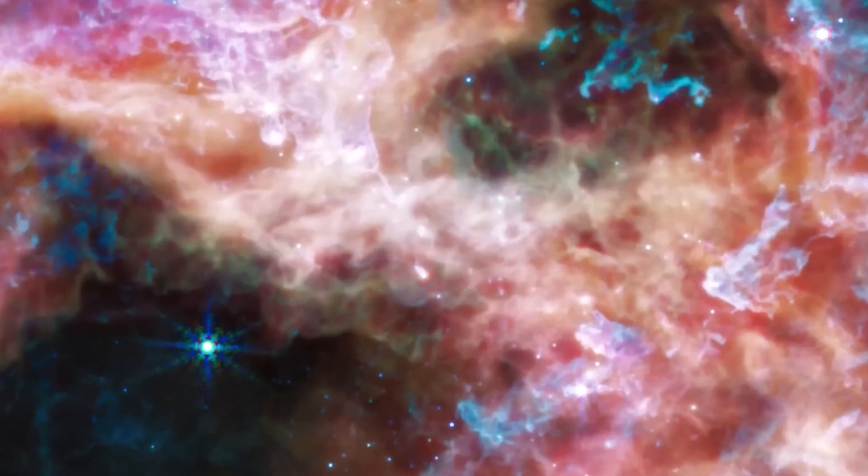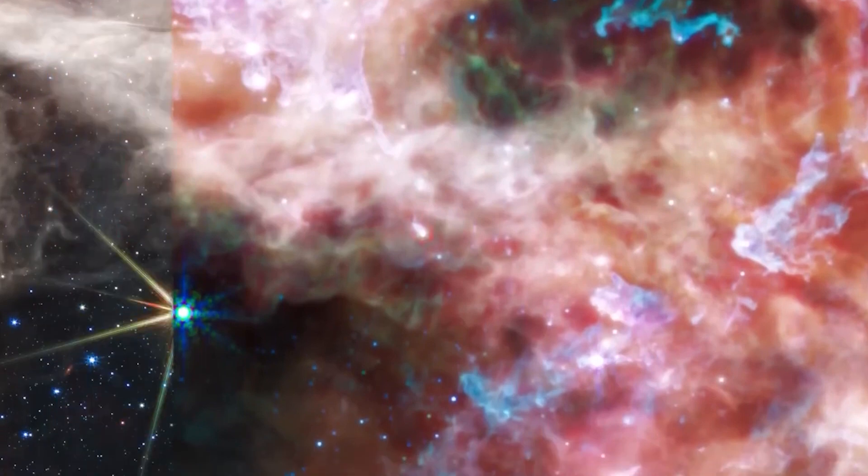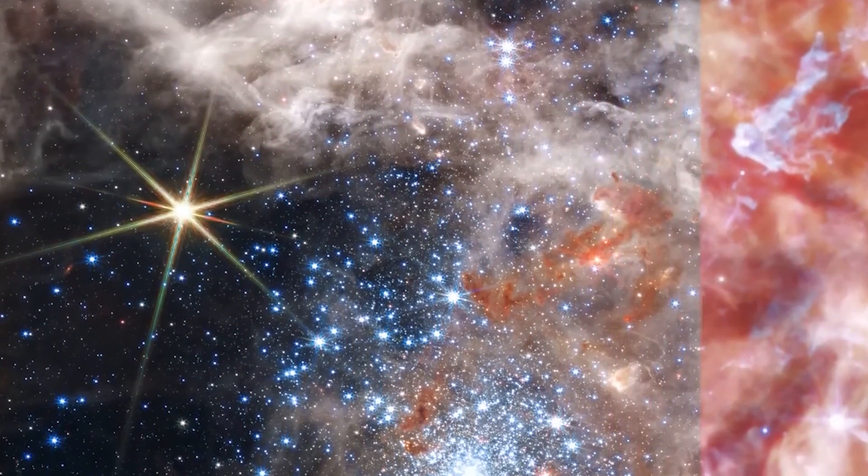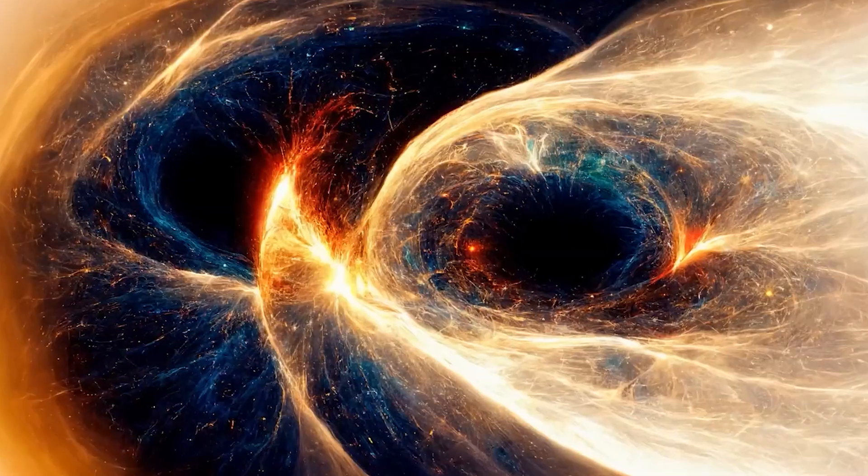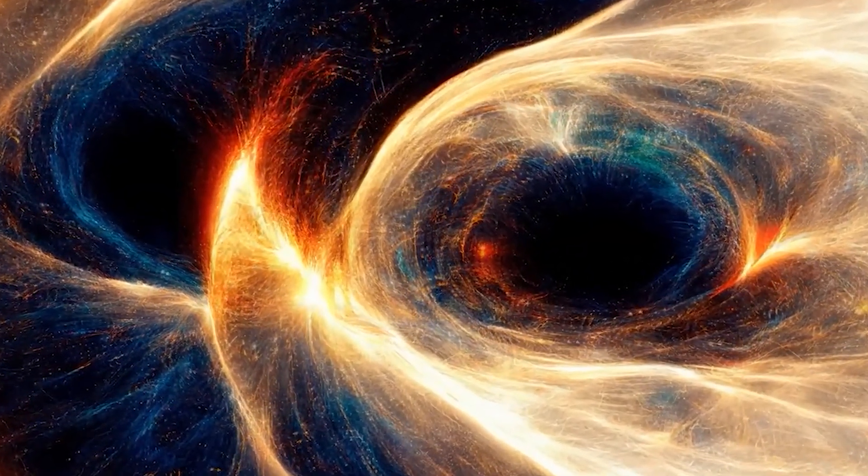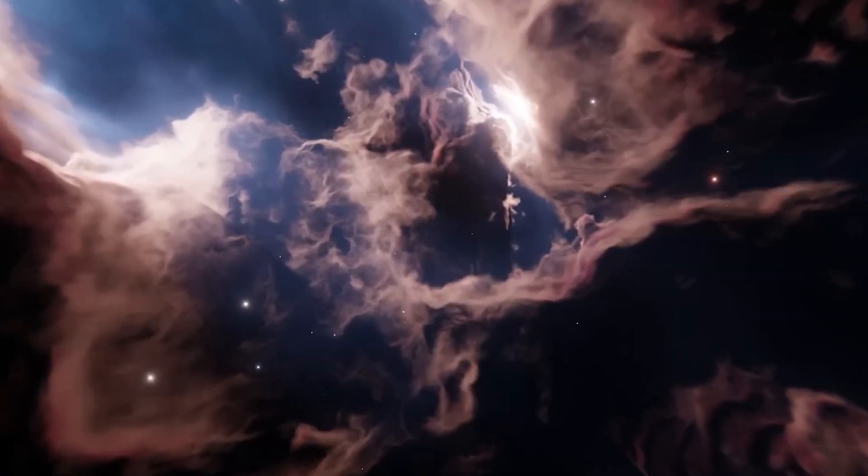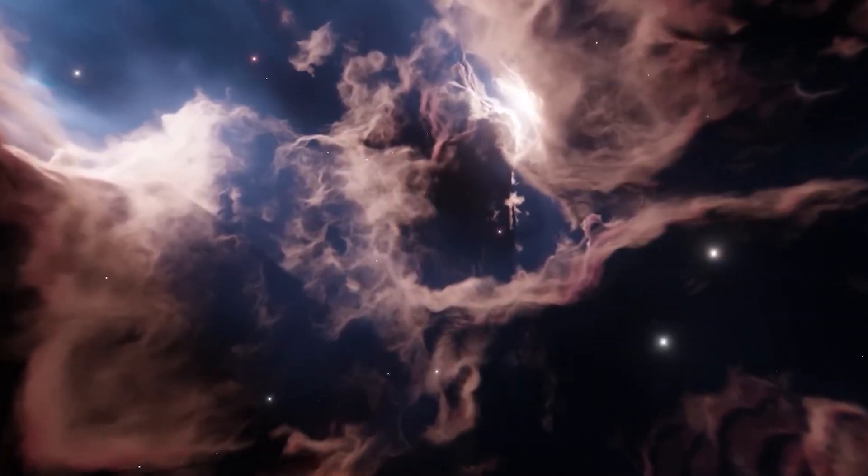The Tarantula Nebula, also known as 30 Doradus, has a spider-like appearance and is the brightest star-forming region in the local group of galaxies. Its chemical composition is similar to star-forming regions from when the universe was only a few billion years old, providing a unique insight into how stars formed in the distant past.